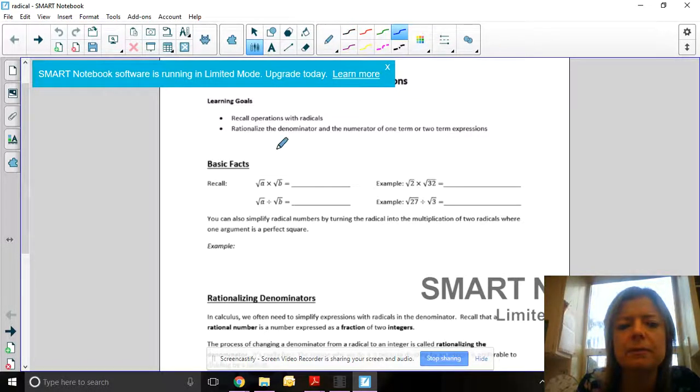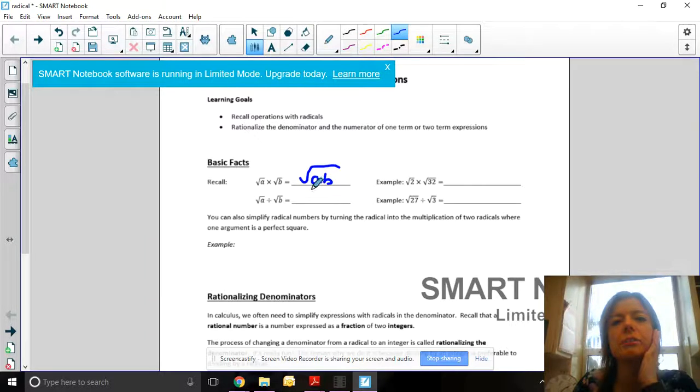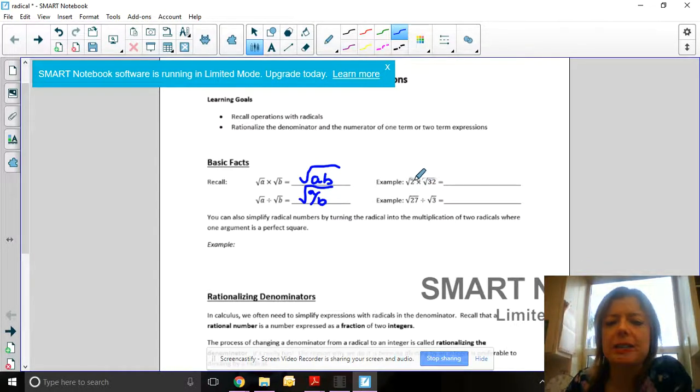Let's remember that if you have the root of a times the root of b, that is just equal to the root of ab. When you're multiplying two roots together, you can just put those multiples under one root. The same thing with division. If it's root of a divided by root of b, that's the same thing as root of a over b. For example, if you have root 2 times root 32, that's the same thing as root 64, which is 8.